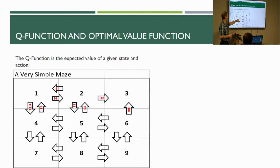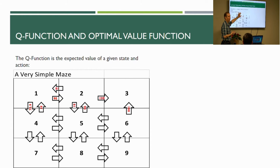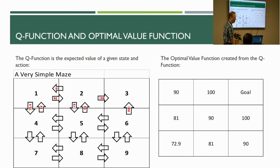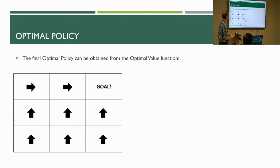If you're in a state, one action gives you 100 points — so instead of having 100 points at state three, you get 100 points for the action that moves you to state three. You get a utility of 81 for moving further away from the reward. You're assigning utilities to actions instead of states. You could translate between the Q function and the utility function by simply asking: which of my actions in this state gives the highest reward? It's the same idea.